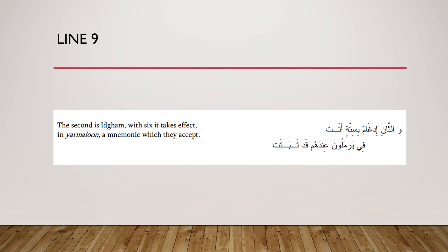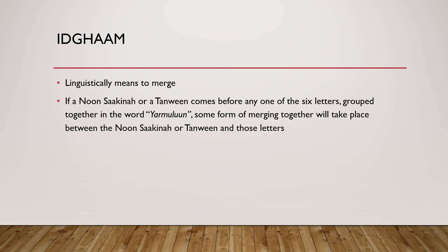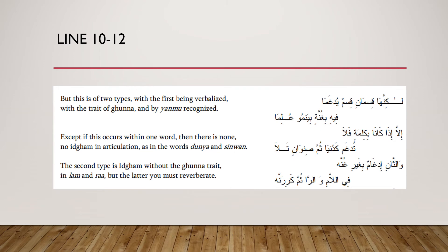The next line the author mentions: 'The second is Al-Idgham with six letters, gathered in the word yarmuloon, established with them.' The second rule from the four rulings is Al-Idgham. Al-Idgham linguistically means to merge. If a noon sakinah or tanween comes before any one of the six letters gathered in the word 'yarmuloon', some form of merging will take place between the noon sakinah or tanween and those six letters. The author then mentions the categories of Al-Idgham.